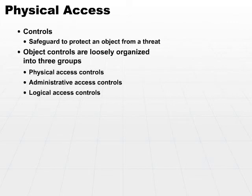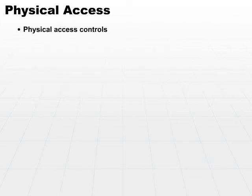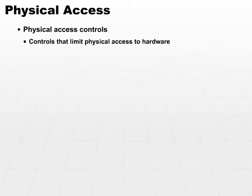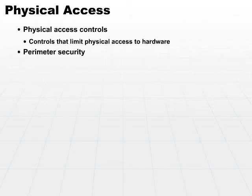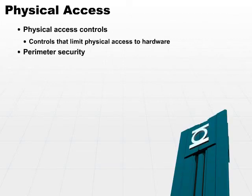Let's look at each one individually. Physical access controls are the controls that are going to limit physical access to the hardware — basically, they're going to stop you from being able to touch actual hardware. The first place to start is perimeter security. Perimeter security keeps anyone from approaching the location where you're storing hardware or where any object that you want to control is going to be located. A good example would be a fence.